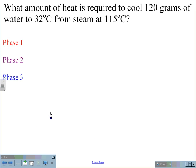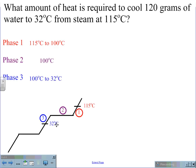The reason we are only going to use 3 phases is we are only changing from 115 down to 32. Phase 1 will include the step from 115 down to 100. Phase 2 will be the horizontal phase change at 100 degrees Celsius. Phase 3 will take us from 100 degrees Celsius down to 32 degrees Celsius.